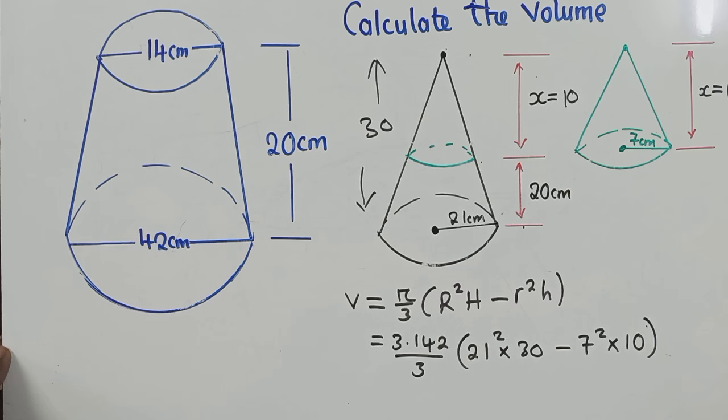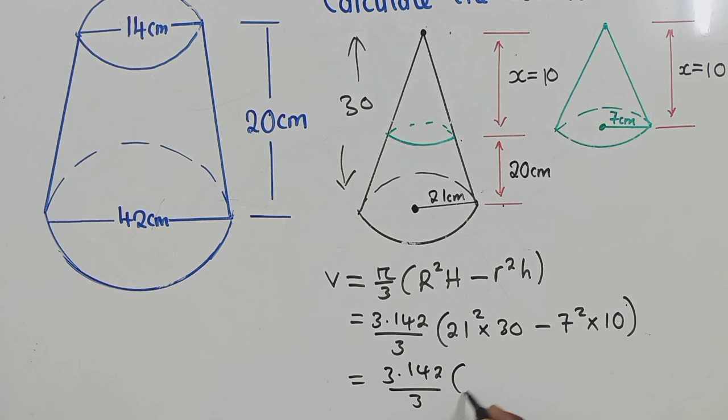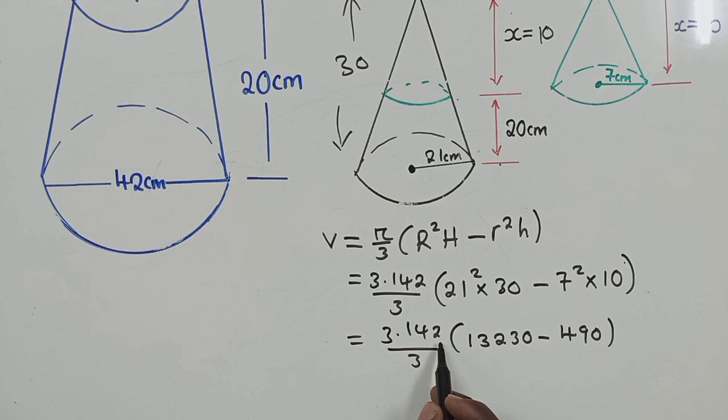3.142 over 3 and here when we punch what we're getting here, we're getting 13,230 minus here we're getting 490.